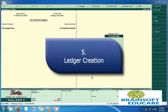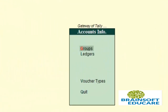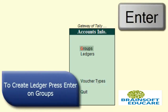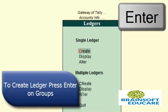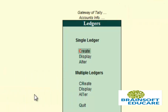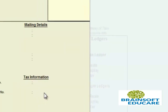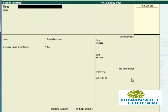Welcome friends. In this video tutorial we will learn how to create ledgers in Tally. Go to the Gateway of Tally and press Enter on Account Info. After going to Account Info, you will get two option groups and ledgers. Now go to the ledger option, where you will see one option named Create. Press Enter on the Create option.